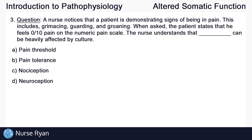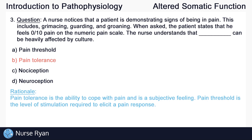Question number three: a nurse notices that a patient is demonstrating signs of being in pain, including grimacing, guarding, and groaning. When asked, the patient states that he feels 0 out of 10 pain on the numeric pain scale. The nurse understands that blank can be heavily affected by culture. The answer is B, pain tolerance. Pain tolerance is the ability to cope with pain and is a subjective feeling which can be affected by culture. Pain threshold, however, is the level of stimulation required to elicit a pain response, and is usually similar amongst most people.